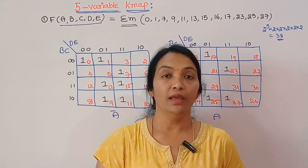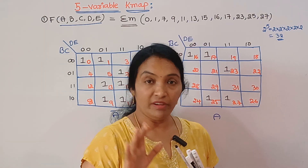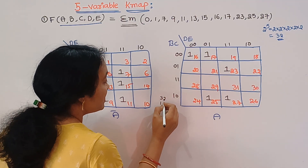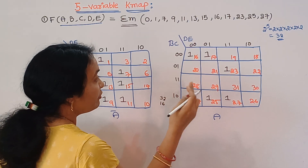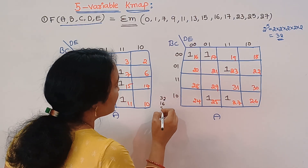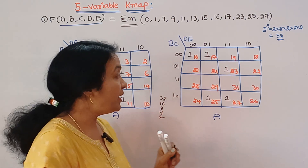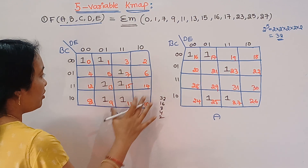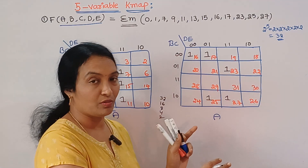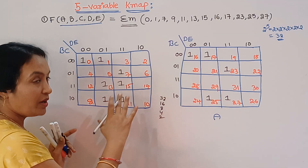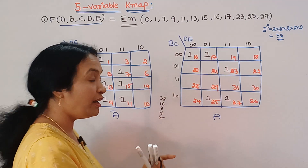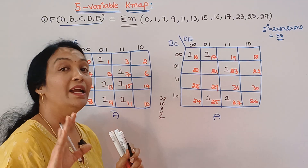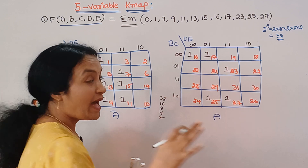Grouping: 16 ones are possible, then 8, then 4, then 2 — all groupings in powers of 2 are possible. If you have 5, 7, 13, 15 in the same place and also 21, 23, 29, 31 — there are corresponding symmetric positions. If you have 4 ones, there are groups possible. You can check this grouping pattern.